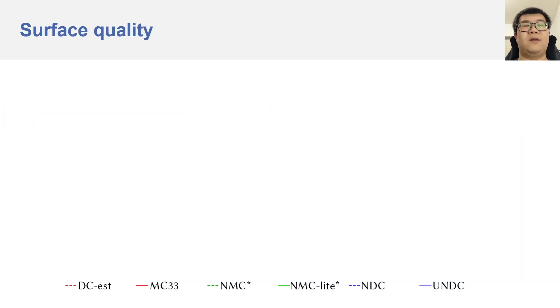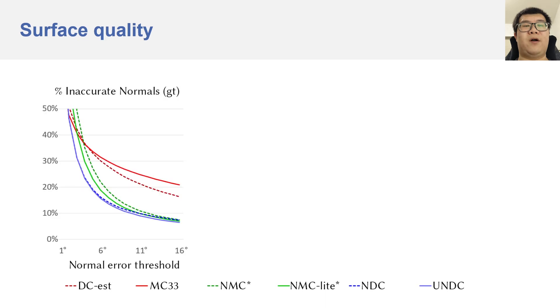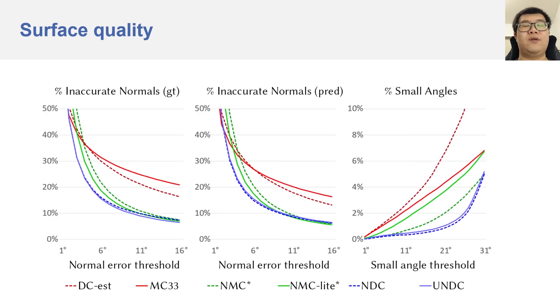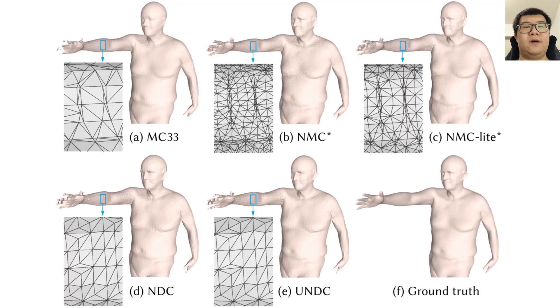We also evaluated the quality of the output surfaces by plotting the percentage of inaccurate surface normals and the percentage of small acute angles in the output triangles. Notice that the blue curves representing our method are always the lowest, meaning that our method has better surface normals and better triangle quality. Here are some examples showing that our method has better triangle quality by producing less triangles with small acute angles.